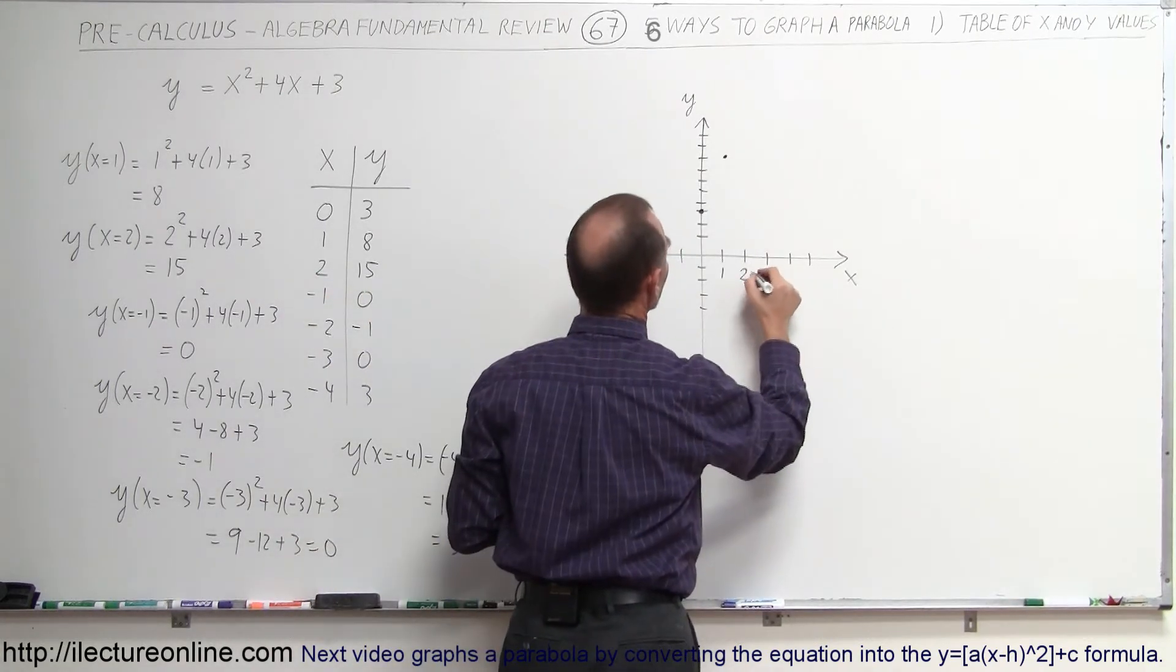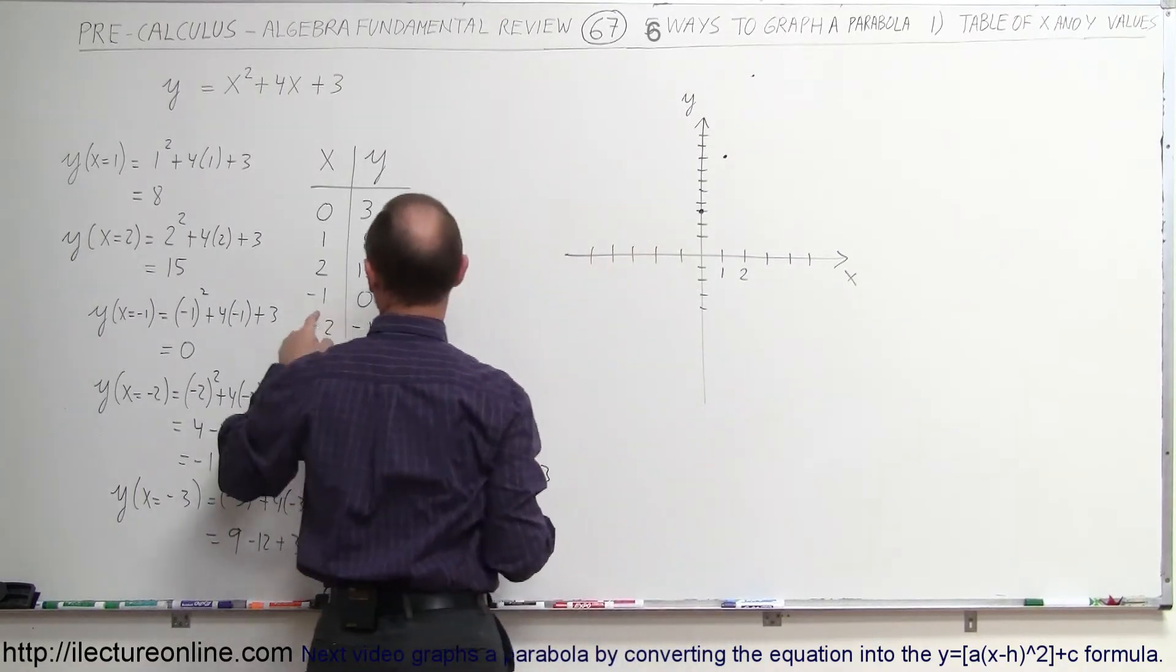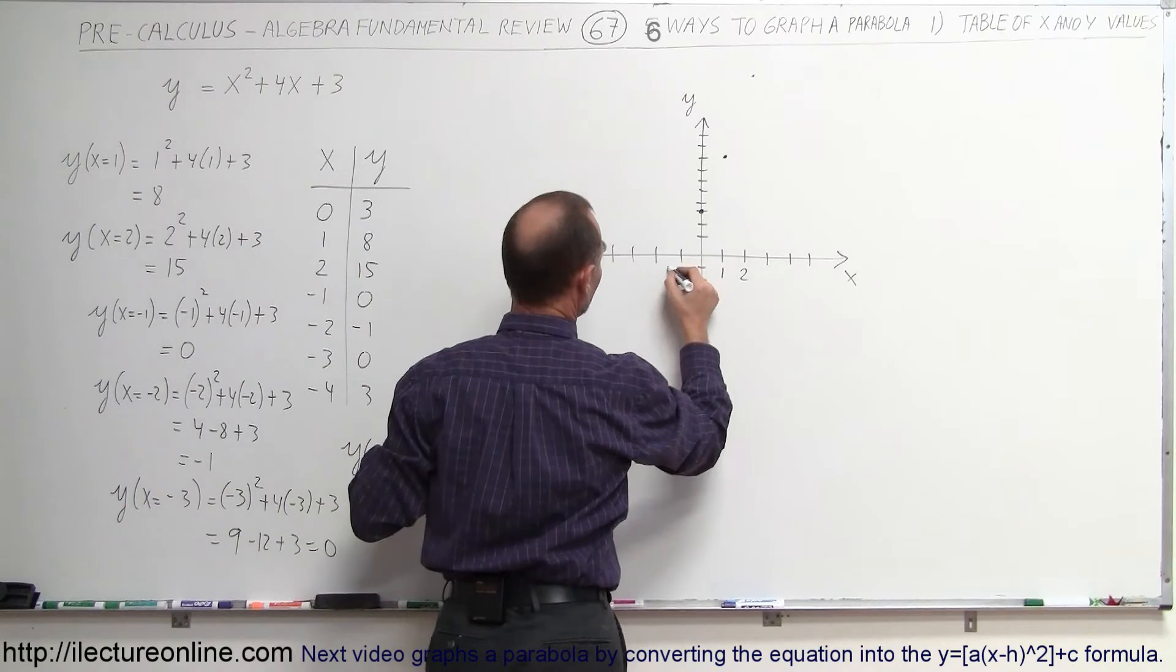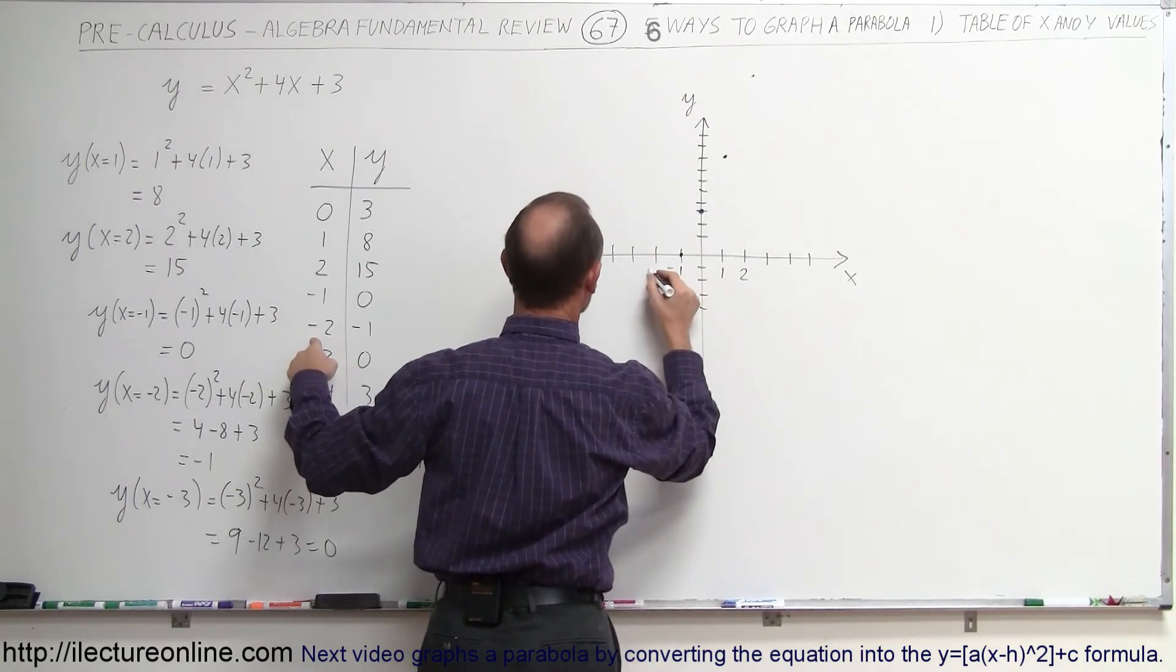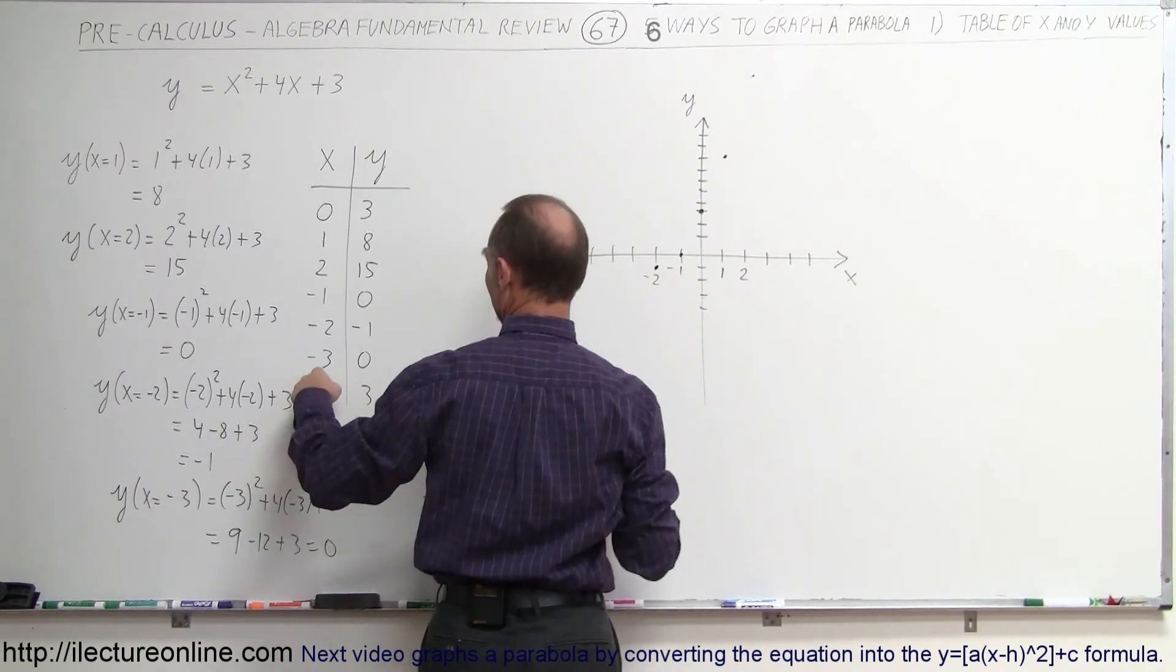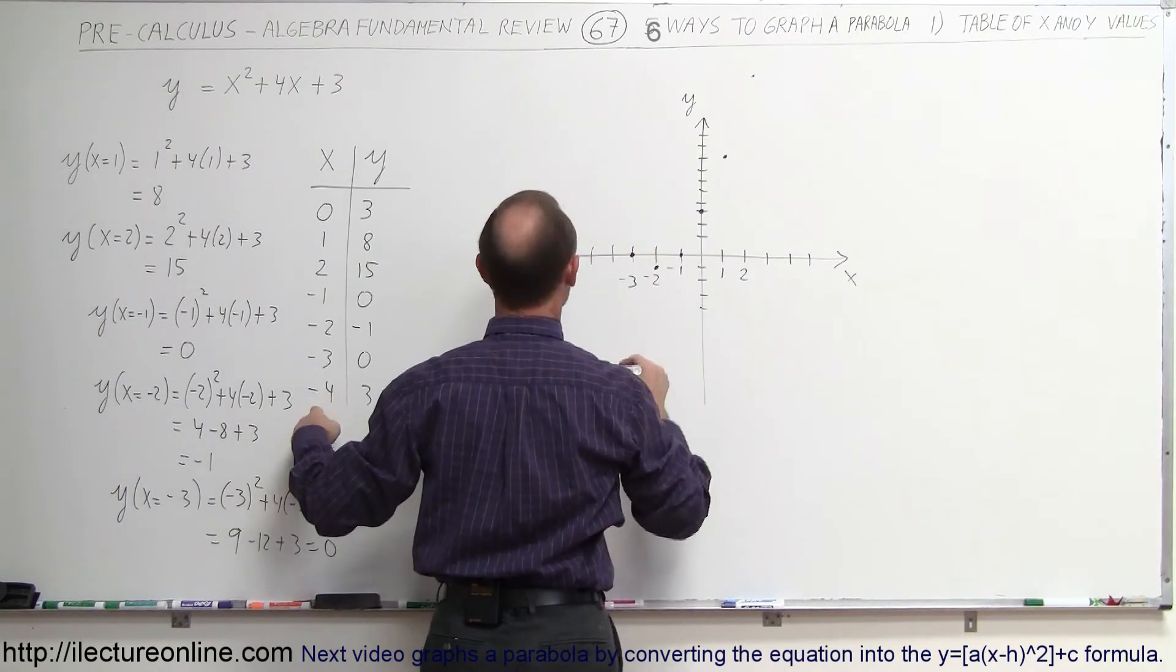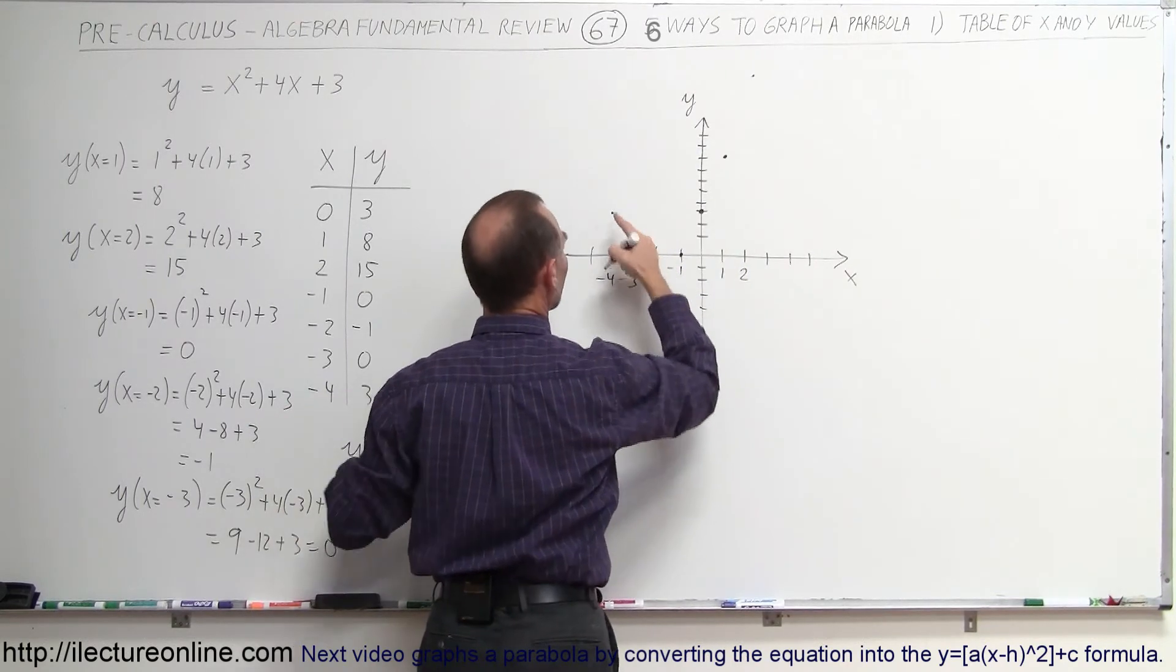When x equals 2, y equals 15. That's way up here somewhere. Okay, when x equals negative 1, y equals 0. So x equals negative 1, y is 0, that's this point right there. When x equals negative 2, then y equals negative 1. That would be this point right there. Negative 1 is right there. Negative 3 back to 0, that's this point right there. And negative 4, 3. So negative 4 and 1, 2, 3, we're back up at this point right there.